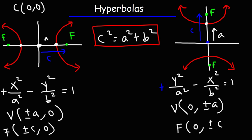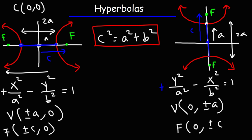The next thing to be familiar with is the transverse axis. The transverse axis is a line segment that connects the two vertices together, so the length of the transverse axis is 2a. For a vertical hyperbola it's a vertical transverse axis, and for a horizontal hyperbola it's horizontal. The distance between the two focal points is always 2c, but the length of the transverse axis is 2a.